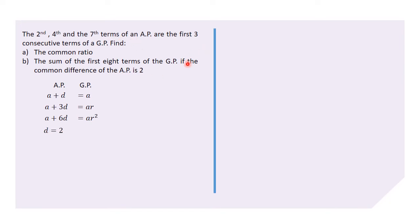Again, we're also told that the common difference for the AP is 2, so that is helpful. So this will be a + 2, a + 6, and a + 12. Now, since we want to find the common ratio for part a...